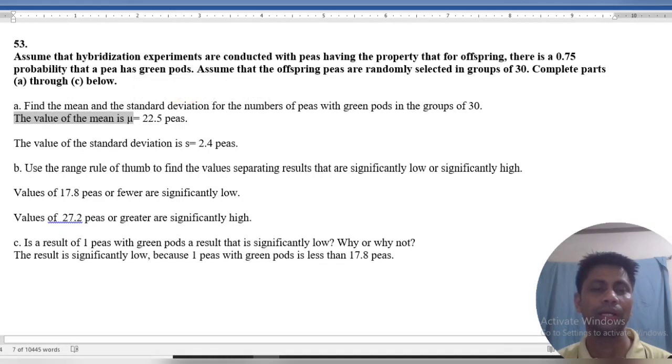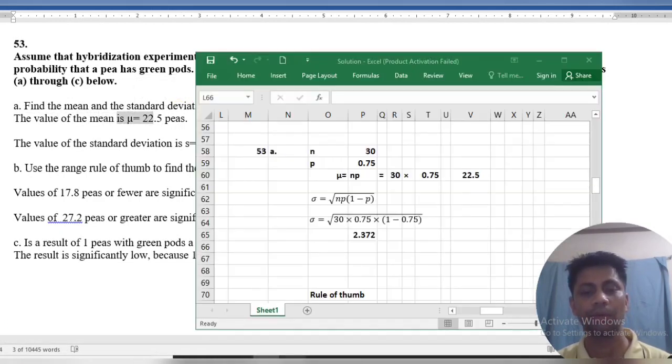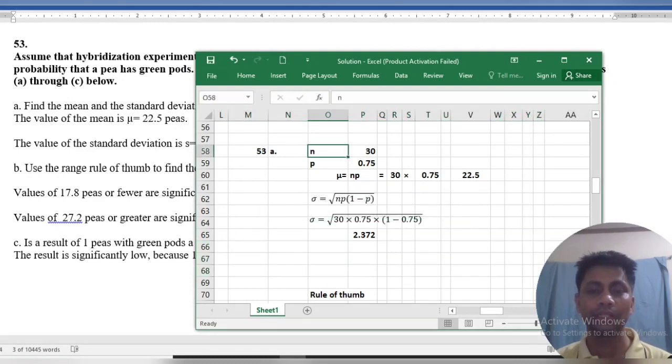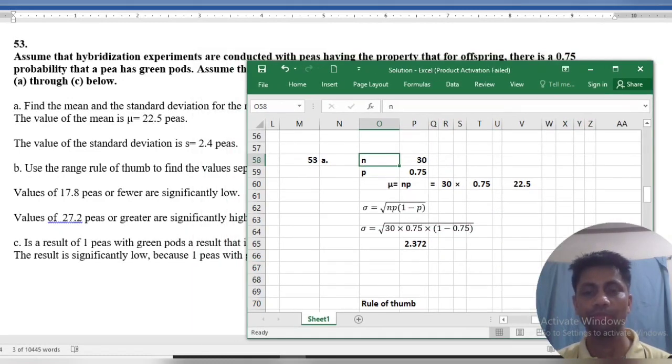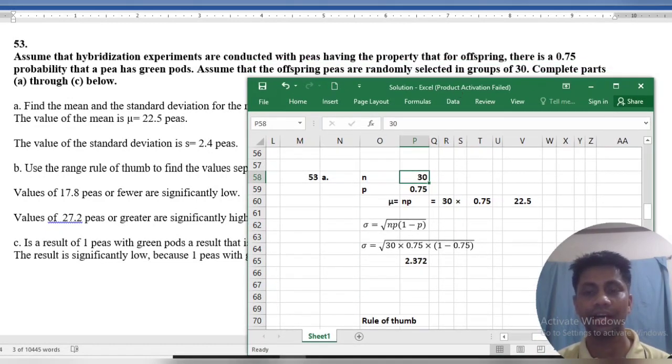The mean is how we can find our mean. We know the binomial probability distribution mean equals n times p. The mean here, n is 30 and p is 0.75, so the mean is 22.5.